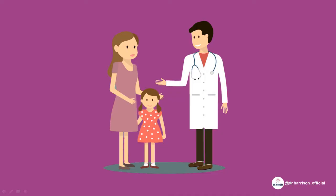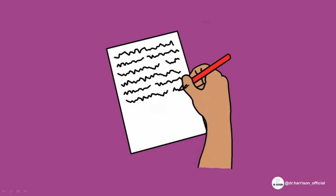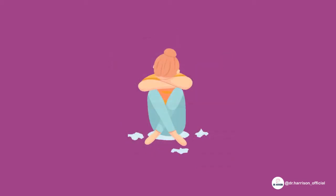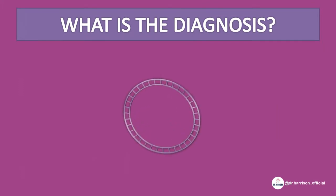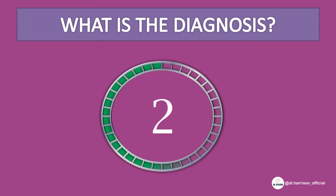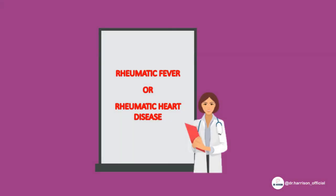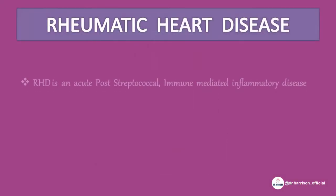A 10-year-old girl came with a history of fever for one week, associated with poor performance in school. Her teacher noticed a gross change in her handwriting. Her mother complains she is unable to concentrate, is emotionally very labile, and starts crying when asked her name. On examination, she had fast purposeless involuntary distal movement and subcutaneous nodules on the extensor aspect of her elbow. The answer is rheumatic fever — rheumatic heart disease (RHD).